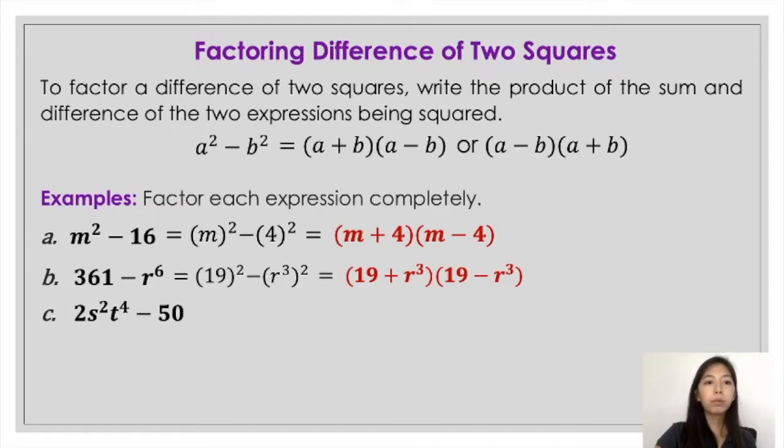The common factor of 2s squared t raised to 4 and 50 is 2. So therefore, you can bring out that 2, and this would now be the new expression: 2 times the quantity of s squared t raised to 4 minus 25.